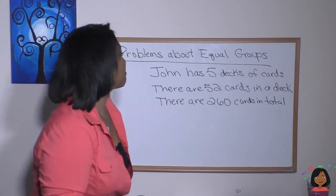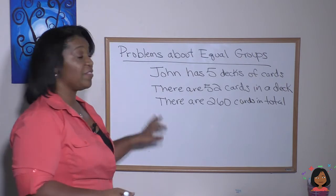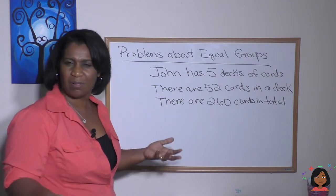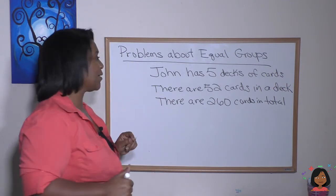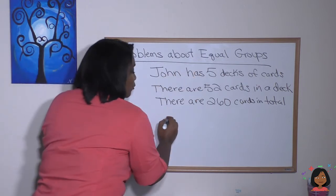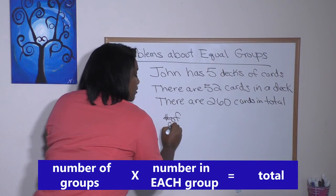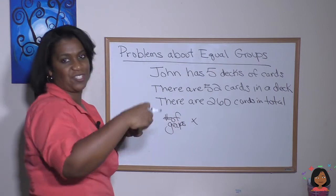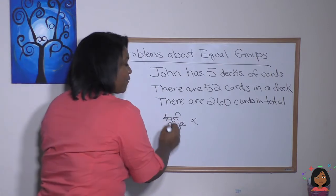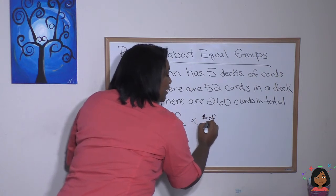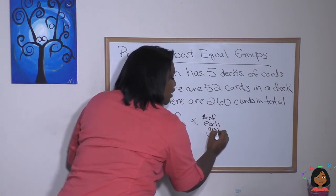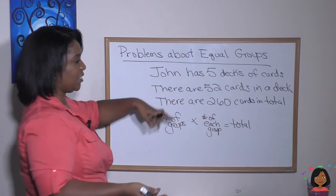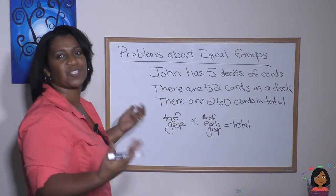Take a look at this problem. John has five decks of cards and there's 52 cards in each deck, which means there are 260 cards in total. How did we figure that out? He has five decks — that's the number of groups. Then there are 52 cards in each deck, so that's the number in each group. Those are multiplied together to get the sum total. So we did 52 times five and got 260.